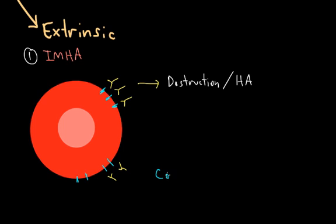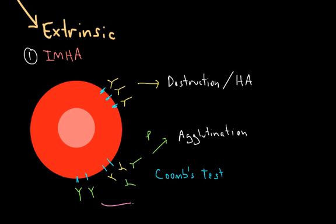The exact cause of IMHA is unknown, but it can be tested for using the Coombs test, and here's how it works. Antibodies for the anti-RBC antigen, which I'll show here in green, are added to a sample of red blood cells. If the sample is positive, meaning that anti-RBC antigens are present, the blood will agglutinate, or clump. If the test is negative, the blood sample will not agglutinate, because there's no anti-RBC antibodies present. A positive test is suggestive of IMHA, but not diagnostic.